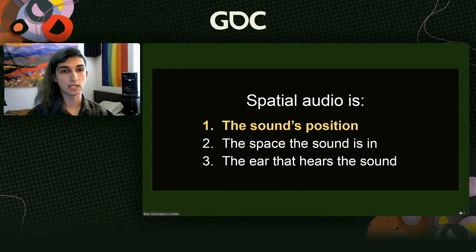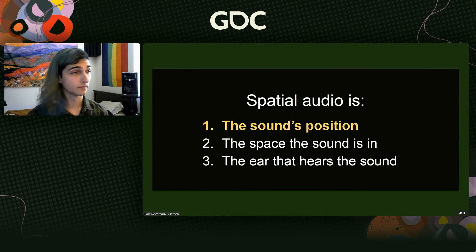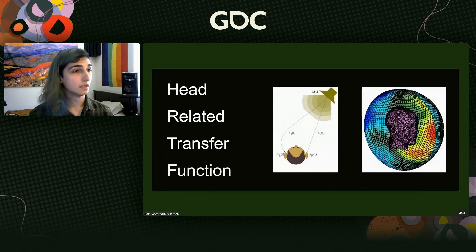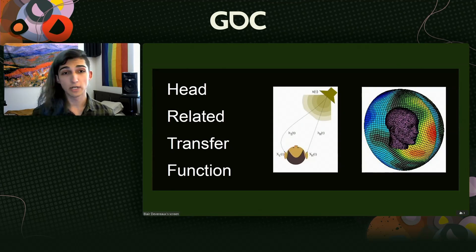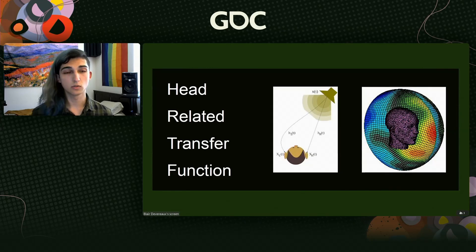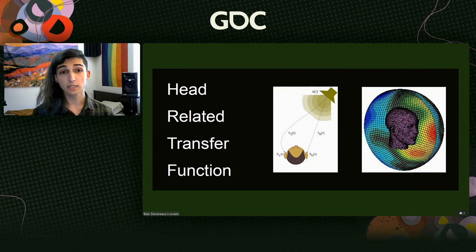In order to talk about a sound's position in a virtual environment, we have to understand how we perceive the position of a sound in a real environment. The human body interacts with audio through the head-related transfer function, or HRTF, and the folds of the ears. These two concepts combine to create something called binaural audio.